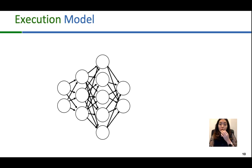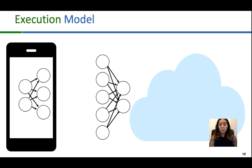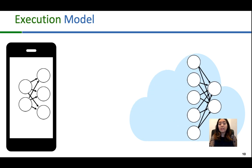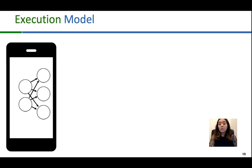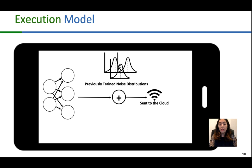Our execution model consists of splitting the neural network into two parts and executing the first part on the edge device and the second more compute-intensive part on the cloud. To increase the privacy of the edge device, we add our randomly generated noise to the output of the edge partition, which obfuscates the excessive information while maintaining the accuracy.